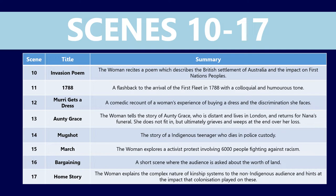Scene 12 is Murray Gets a Dress — a comedic but also somewhat sad scene recounting the woman's experiences buying a dress and the discrimination she faces, including a later encounter with police through a misunderstanding. She shakes it off through humor, but allows the audience to reflect. Scene 13, Aunty Grace, tells the story of a distant relative who lives in London and returns for Nana's funeral. She doesn't fit in, having lost her connection to culture and family, but ultimately weeps and reclaims that connection at the end of the scene.